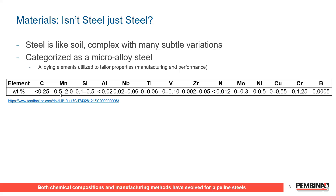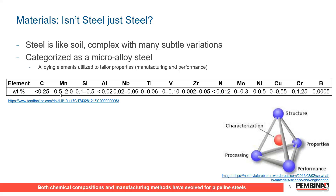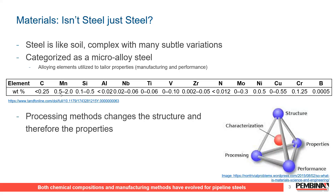Just know that steel is made of many different elements, and the amount of those elements changes how the steel behaves. The composition of these elements has even changed over time based on steel-making practices. This is the holy grail of materials engineering: the structure-property-processing-performance relationship. It's not only what is in it, but how it is processed will contribute to its structure that eventually dictates the performance. As processing methods of pipelines have changed over time, so have steel-making practices, and therefore so have their properties.